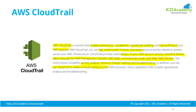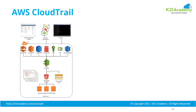CloudTrail provides a history of events for your AWS account, whether actions are performed from the command line, APIs, or the AWS console. It tracks all of these so your security team can review what happened and go back to review changes. It also helps in troubleshooting issues related to security or normal audit compliance.